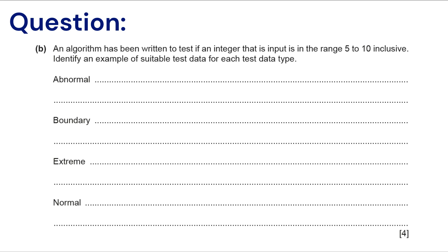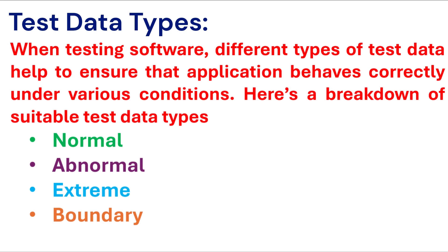To solve this question, let's first understand the different test data types. When testing software, different types of test data help to ensure that the application behaves correctly under various conditions. Here's a breakdown of suitable test data types: normal, abnormal, extreme, and boundary. Let's discuss one by one and then identify the test data for the given range in our question.